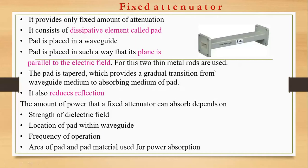Two thin metal rods are used. The pad is tapered, which provides a gradual transition from the waveguide medium to the absorbing medium — because when transmitting, you're absorbing power. It also reduces reflections. The amount of power a fixed attenuator can absorb depends on four factors: the strength of the dielectric field, how the pad is located within the waveguide, the frequency of operation, and the area and material of the pad used for power absorption.